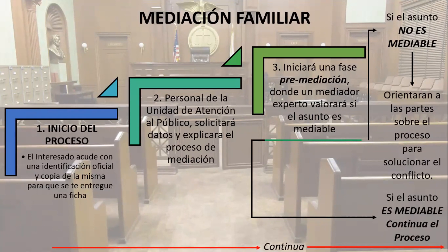El interesado acude con una identificación oficial y copia de la misma para que se le entregue una ficha, porque tiene la voluntad de resolver este conflicto a través de mediación familiar. Vamos a suponer que estamos en un concubinato, tenemos un hijo, ya no vamos a continuar viviendo como pareja, pero queremos resolver el tema de la guardia, custodia y los alimentos.